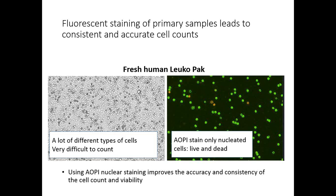By using fluorescent staining of primary cells, we can perform more consistent and accurate cell counts. For a fresh human leuko pack, there are many different cell types in bright field — platelets, red blood cells — making it very hard to count manually. By using acridine orange and propidium iodide (AO/PI) staining, we can label only the nucleated cells with live and dead colors. Green represents live cells and red represents dead cells, allowing accurate measurement of cell count and viability.